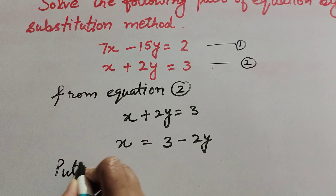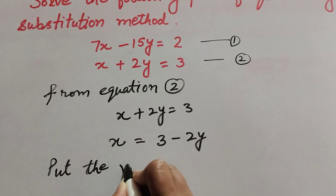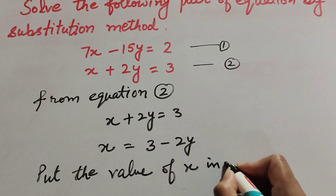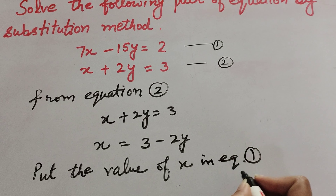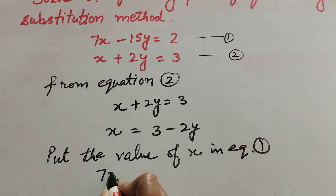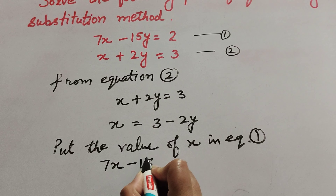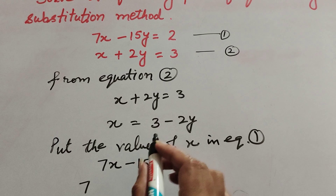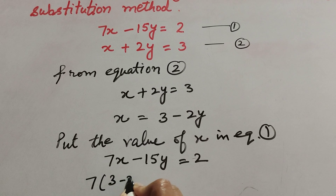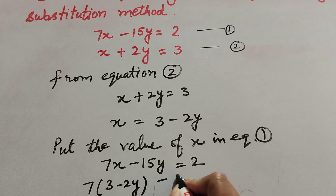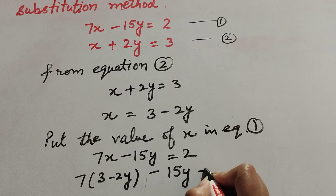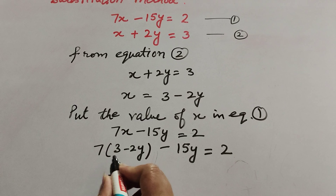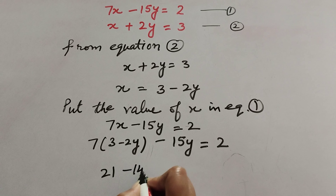We put the value of x = 3 - 2y in equation number 1. Equation number 1 is 7x - 15y = 2. So it becomes 7 into (3 - 2y) minus 15y = 2. Simplifying: 7 × 3 = 21, and 7 × (-2y) = -14y, so we have 21 - 14y - 15y = 2.